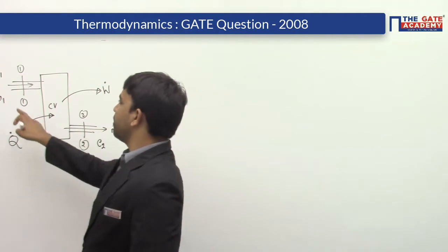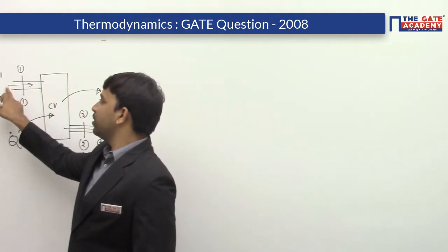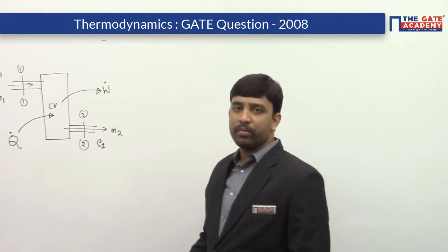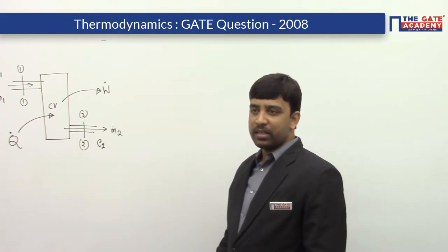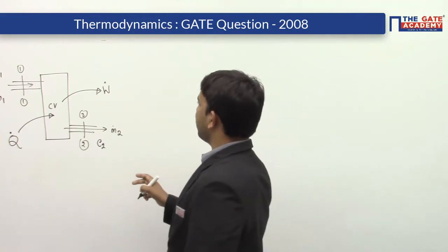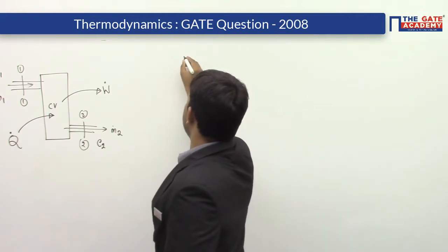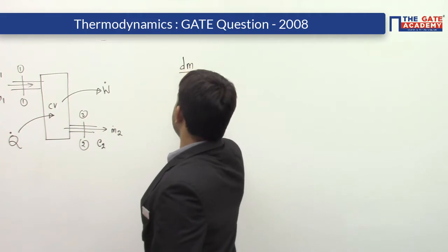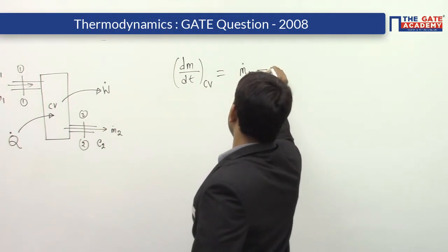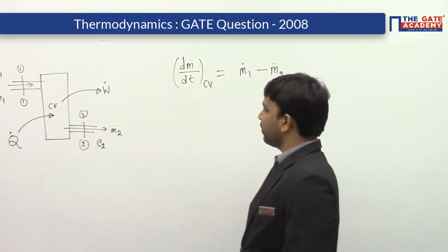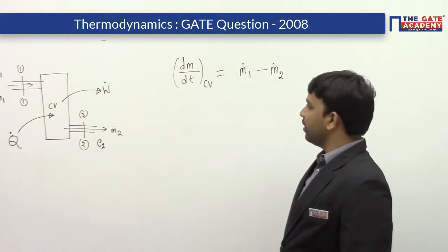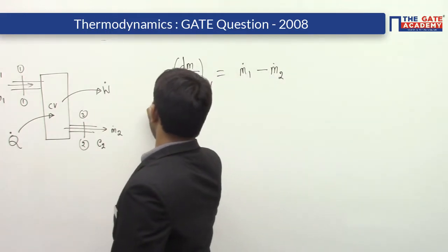If you look at the fluid, E1 includes the enthalpy of the fluid stream, kinetic energy of the fluid stream, and potential energy of the fluid stream. The fluid may have potential energy, kinetic energy, some internal energy, and some pressure energy as it is flowing. So first, if I write the mass balance equation: the rate of change of mass of this control volume is equal to the rate at which mass is entering minus the rate at which mass is leaving, giving you the rate of mass accumulation inside the control volume.